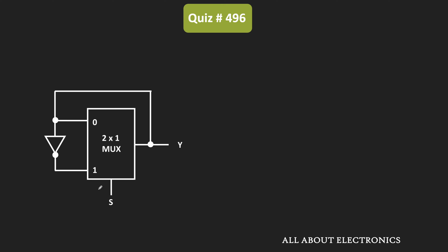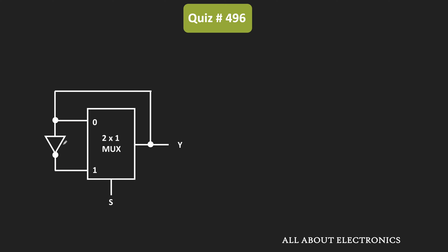As you can see in this circuit, the output Y is connected back to the input side. It is connected as-is to input number 0, while it is connected back to input number 1 of the multiplexer via the inverter. The propagation delay of this multiplexer is 20 nanoseconds, the propagation delay of the inverter is 5 nanoseconds, and the selection input S is permanently set to 1.